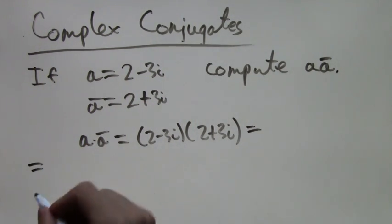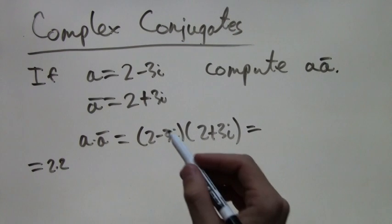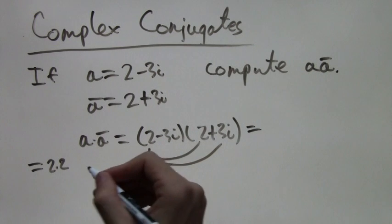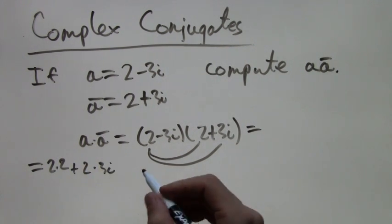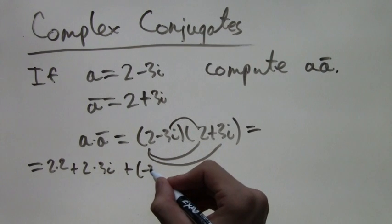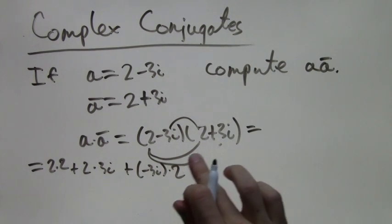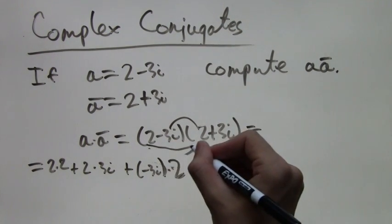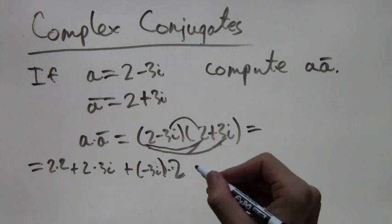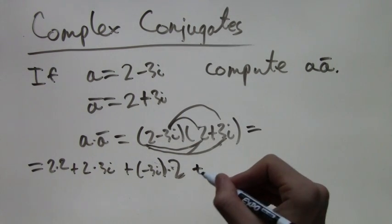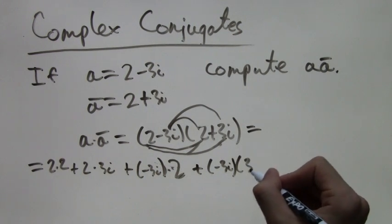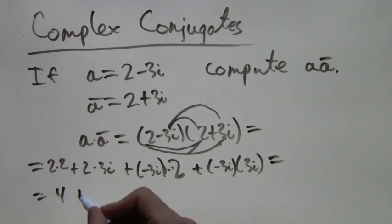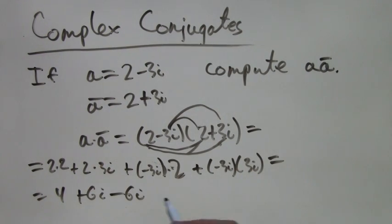We foil it out: 2 times 2 is 4, then 2 times 3i is 6i, negative 3i times 2 is negative 6i, and then negative 3i times positive 3i gives us negative 9i squared.